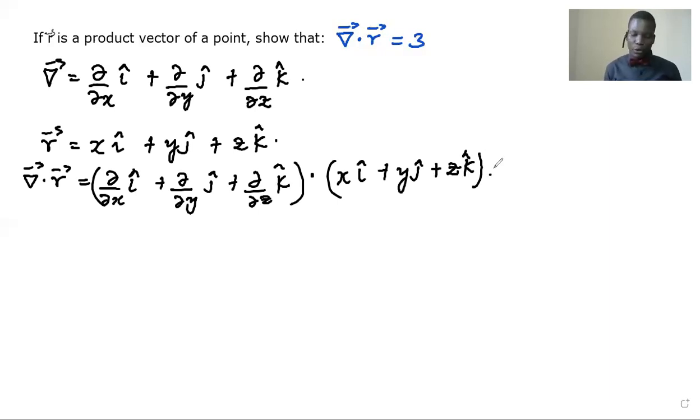So you know from dot product rules, once we dot i dot i, we get one. When we dot i dot j, we get zero, which is the same as i dot k, which is the same as j dot k. Okay, so once we dot those, we get zero. And this is the same as j dot j, we get one. K dot k, we get one as well.